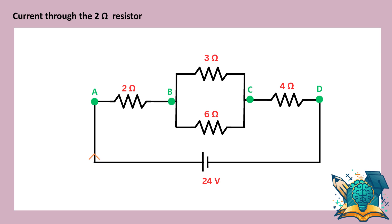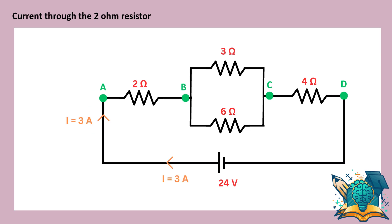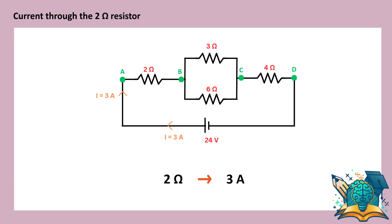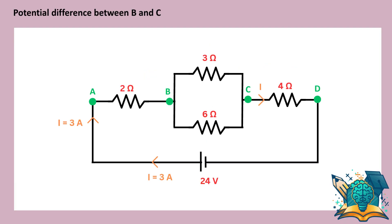As you saw earlier, the entire current flows through the 2 ohm resistor. That means 3 amperes pass through it. The 3 amperes current flowing to point B splits into two paths. We'll label them as I1 and I2.